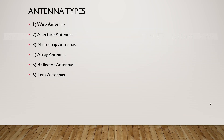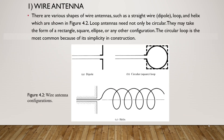There are six types of antennas: wire antennas, aperture antennas, microstrip antennas, array antennas, reflector antennas, and lens antennas. There are various shapes of wire antennas, such as a straight wire, loop, and helix, which are shown in figure 4.2. Loop antennas need not only be circular — they may take the form of a rectangular, square, ellipse, or any other configuration. The circular loop is the most common because of its simplicity in construction.